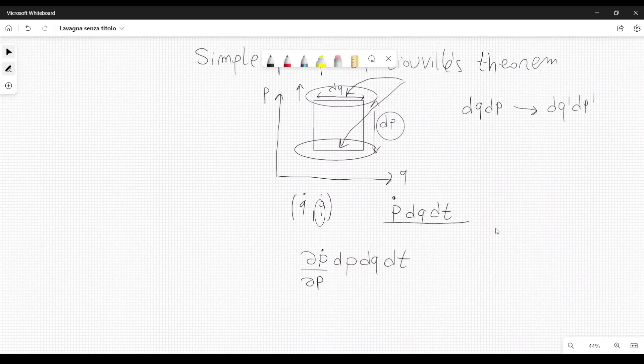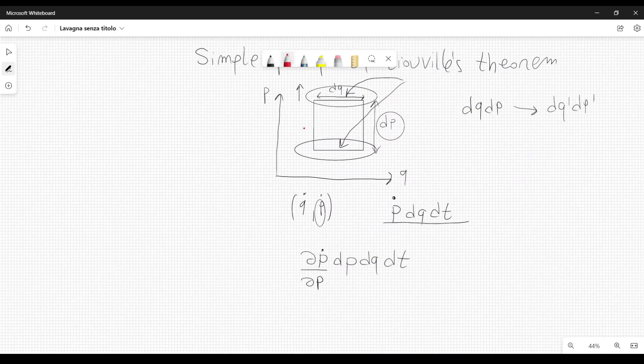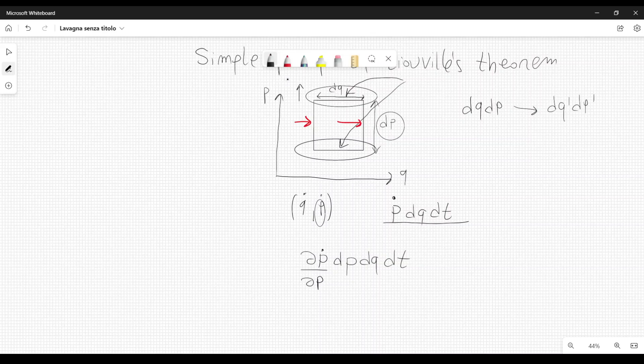Now, we can do exactly the same reasoning for these two edges here, this one and this one. These two edges will change in dq, they will not change in dp. The area will not change in the direction of p, but it will change in the direction of q. So, the overall contribution here is dp dot dp plus dq dot dq times dp dq dt.